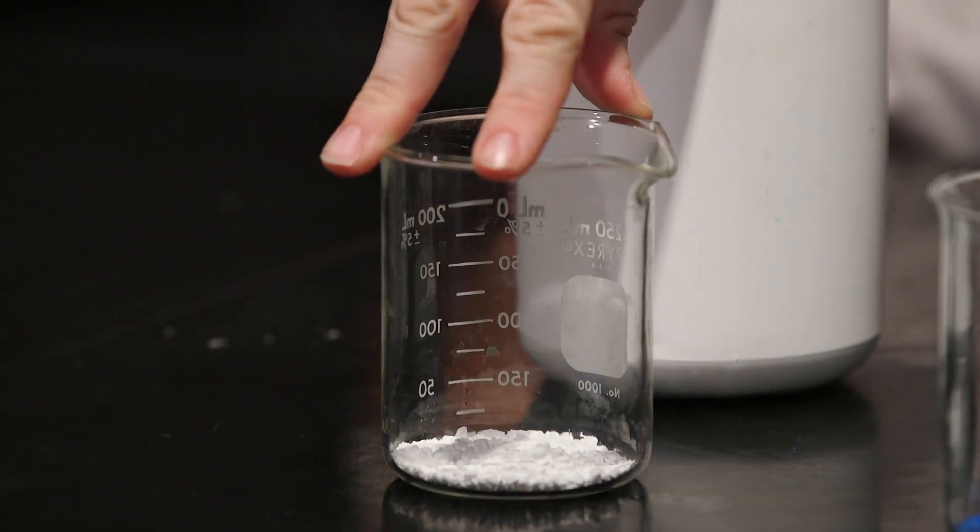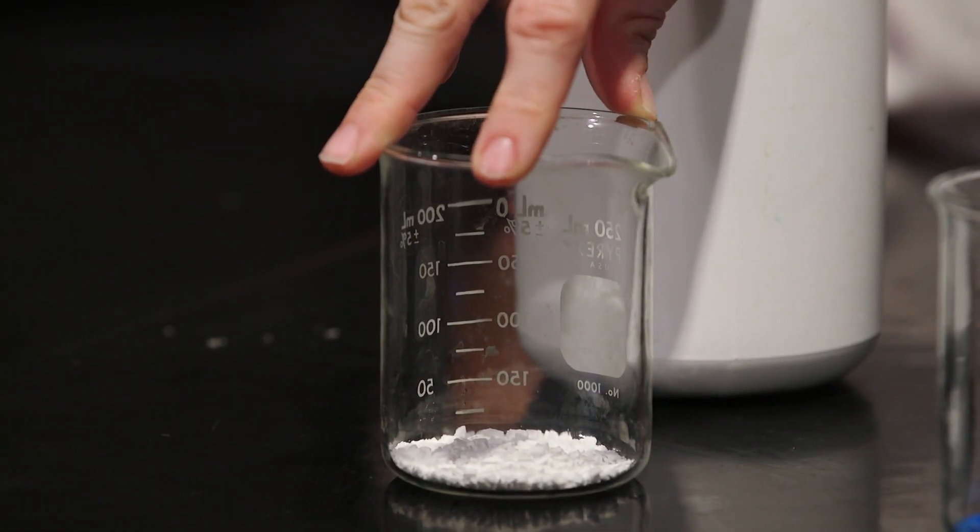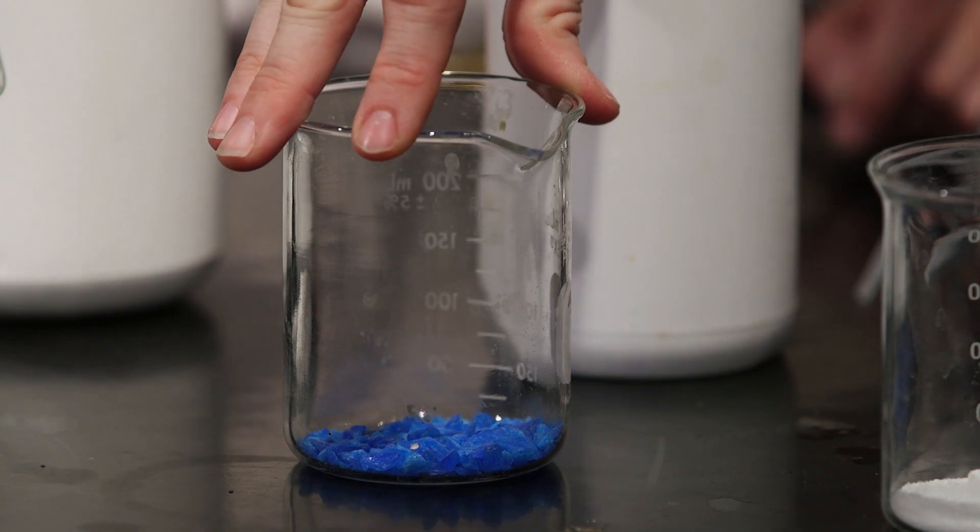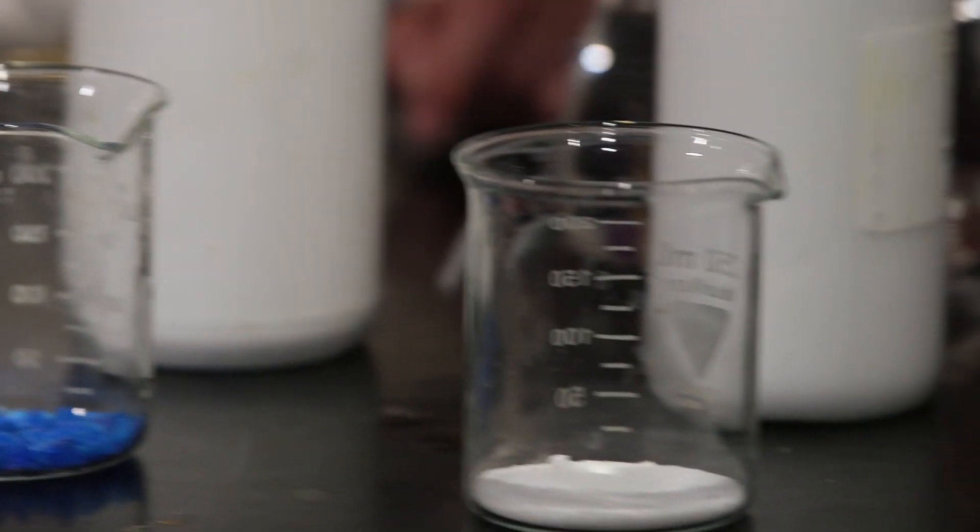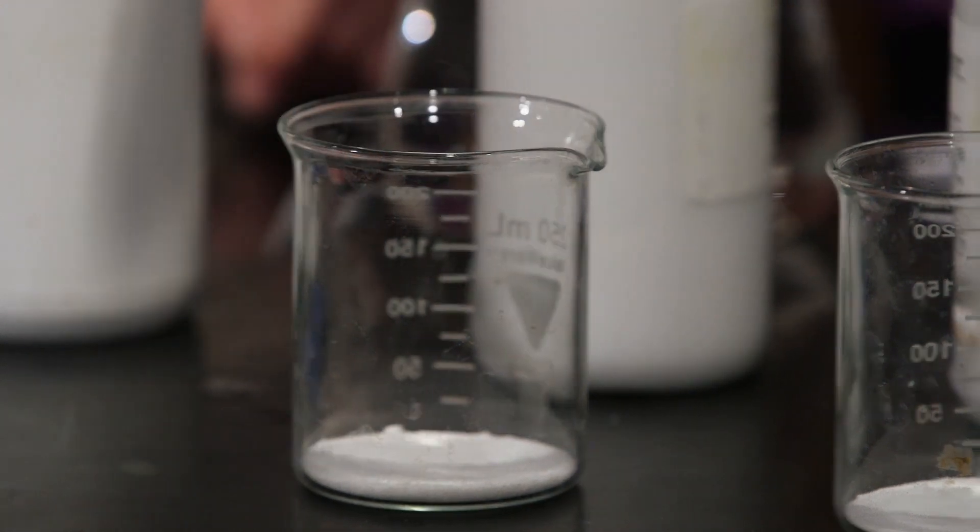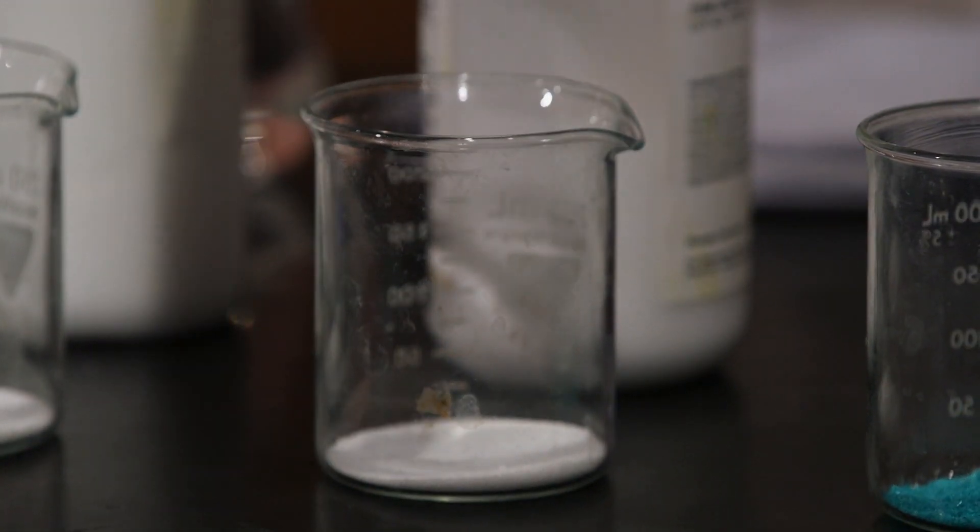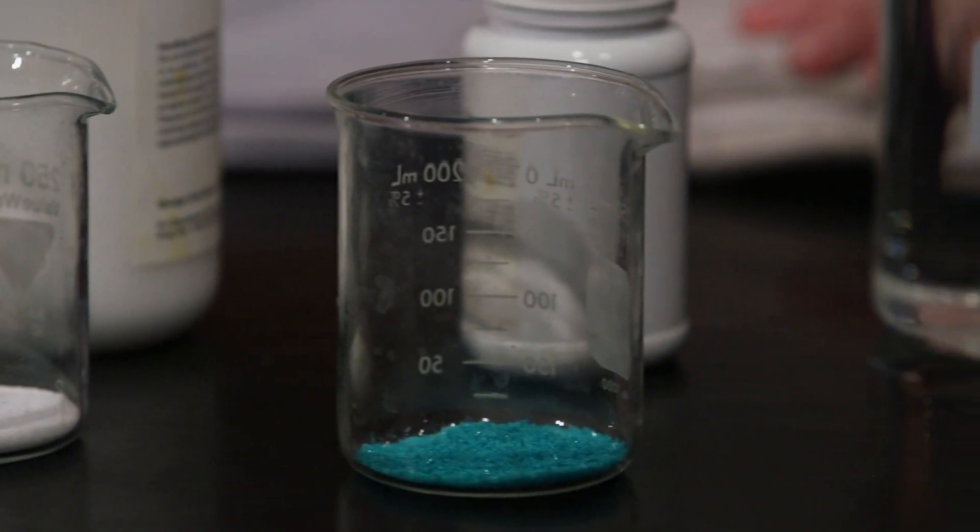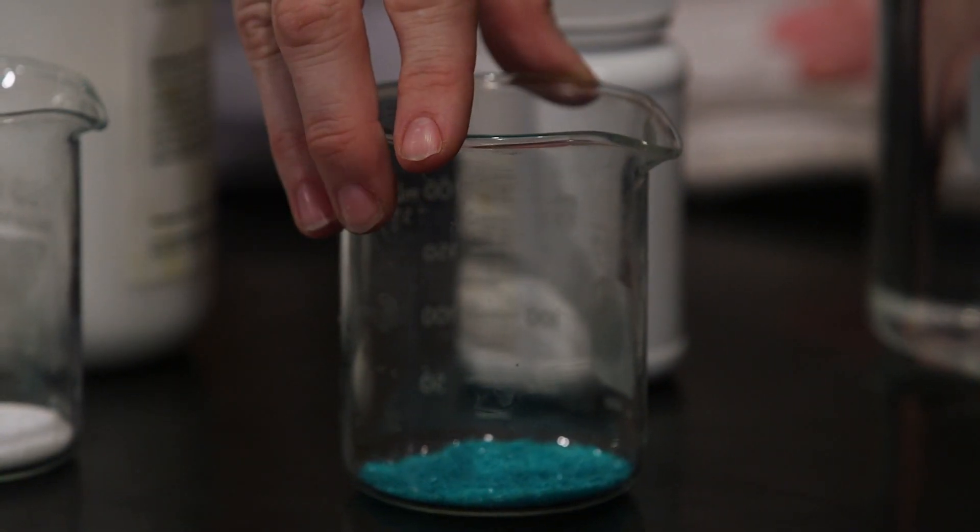The first beaker is our calcium chloride, next we have our cupric sulfate, next we have our strontium chloride, next we have our potassium chloride, and finally we have our cupric chloride.